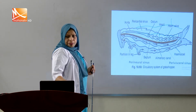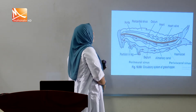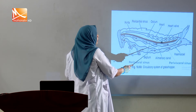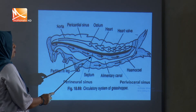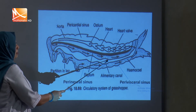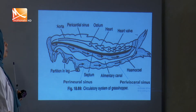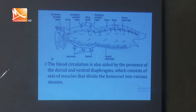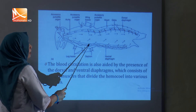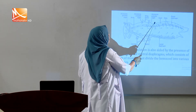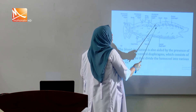Look at this figure. The pericardial sinus encloses the heart. The perivisceral sinus is where the digestive system and visceral organs remain. The perineural sinus is where the nerve cord remains. The perineural sinus lies below the ventral septum, the pericardial sinus lies above the dorsal diaphragm, and the perivisceral sinus lies in between the dorsal and ventral diaphragms.